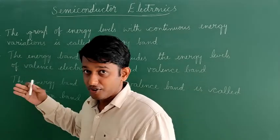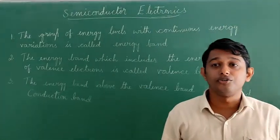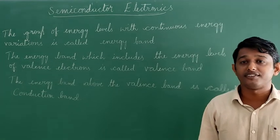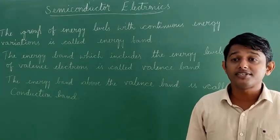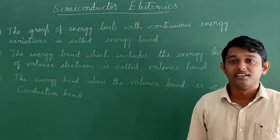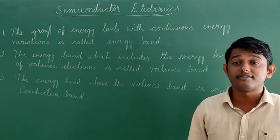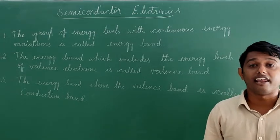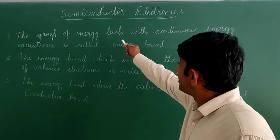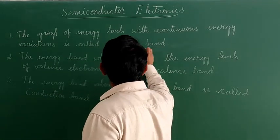Before going further into this lesson, let us know something about energy bands. According to the Bohr atomic model, in an isolated atom, the energy of its electrons is decided by the orbits in which it revolves. In solids, the atoms are closely packed and there is an interaction between neighboring atoms, so the outer energy levels of electrons from neighboring atoms would come very close or even overlap. The group of energy levels with continuous energy variations is called an energy band.